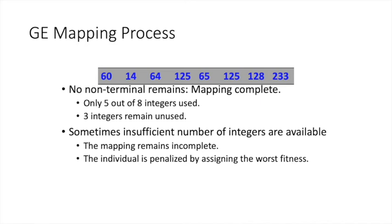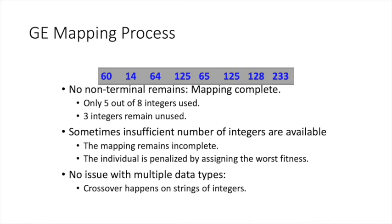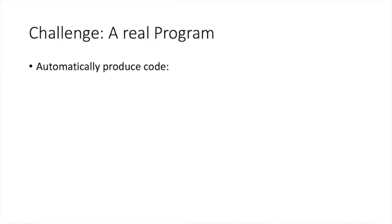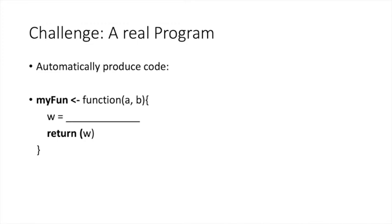Because the mapping is governed by grammar rules, syntactically invalid solutions are never generated — unlike in genetic programming. Can we generate an executable program? The answer is yes. Suppose we want to generate a function in the R language called my_fun with two parameters a and b. It should compute some mathematical expression, store the result in variable w, and return the result stored in w. We need to find the expression to be filled in for w.